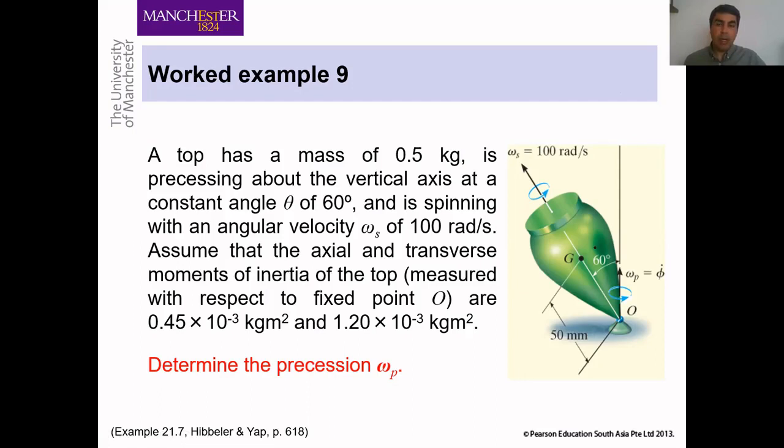We have a top here and the mass is 0.5 kg and it is precessing about the vertical axis at a constant angle. The angle is constant at 60 degrees and spinning with a constant spin rate of 100 radians per second. We are assuming that the axial and transverse moments of inertia of the top are given: 0.45 and 1.20 times 10 to minus 3 kg meters squared.